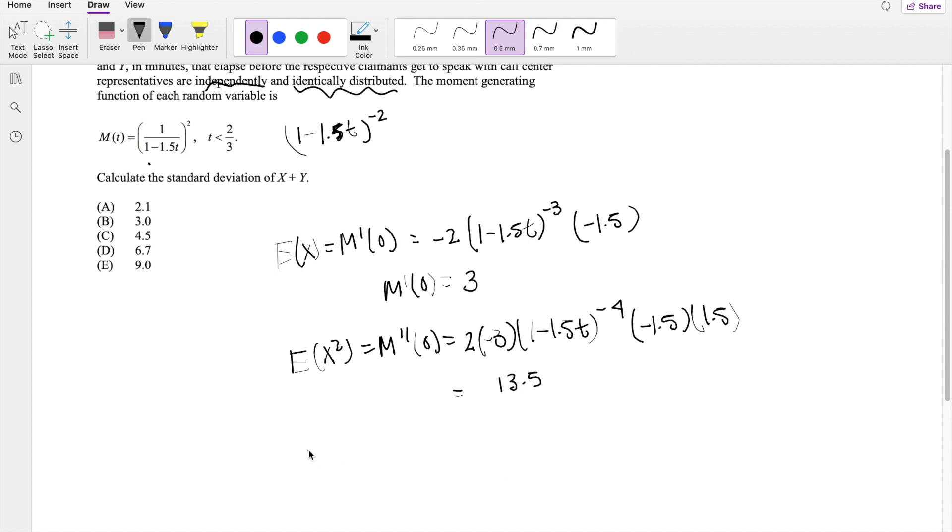So then the variance, variance formula as normal, is equal to the second moment E(X²) minus the first moment squared, 13.5 minus 3 squared, which is equal to 4.5.